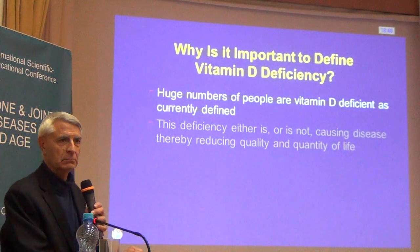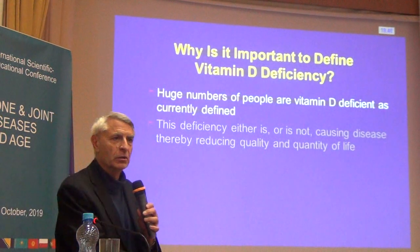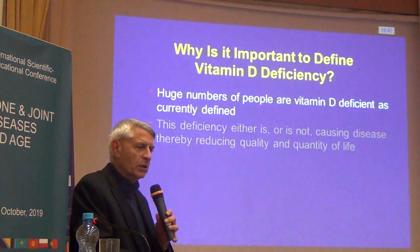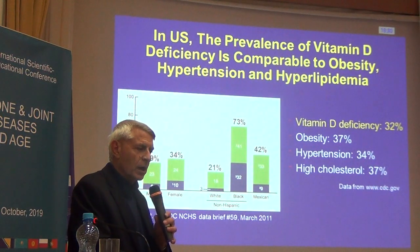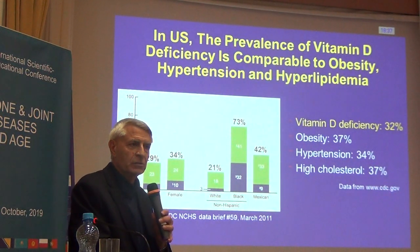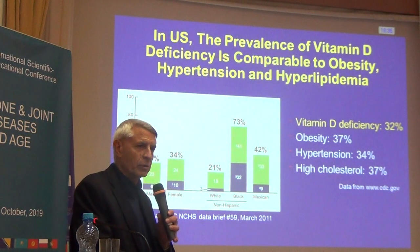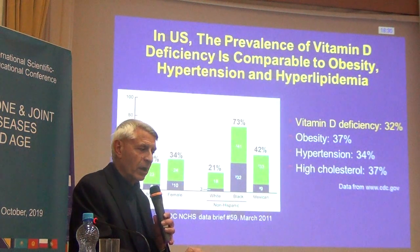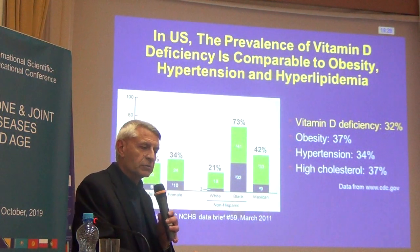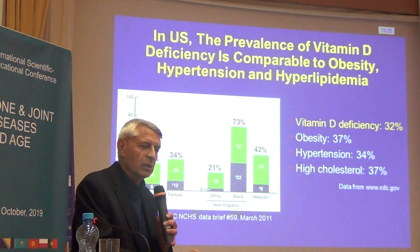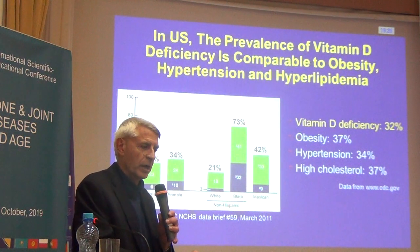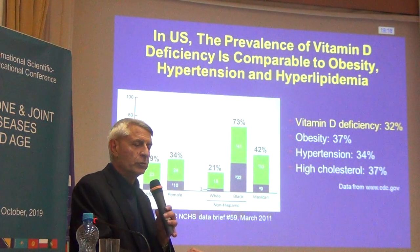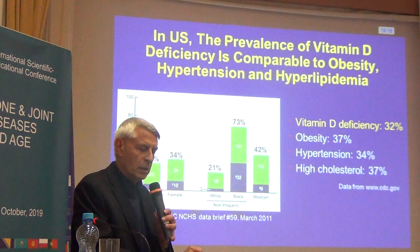So why do we care? Here are U.S. data using a conservative 20 nanograms per milliliter as the level to define low. The prevalence of low vitamin D is similar to obesity, high blood pressure, and high cholesterol. And based on data from Professor Pavarajnik, it's even higher than that in Ukraine.